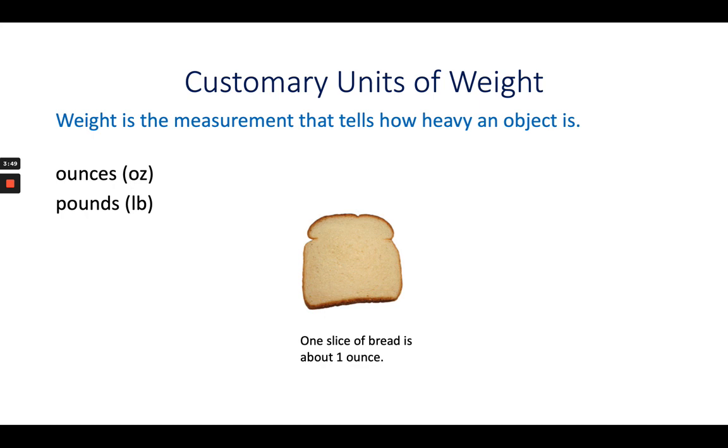The weight of one slice of bread is about one ounce, and the weight of a soccer ball is about one pound.